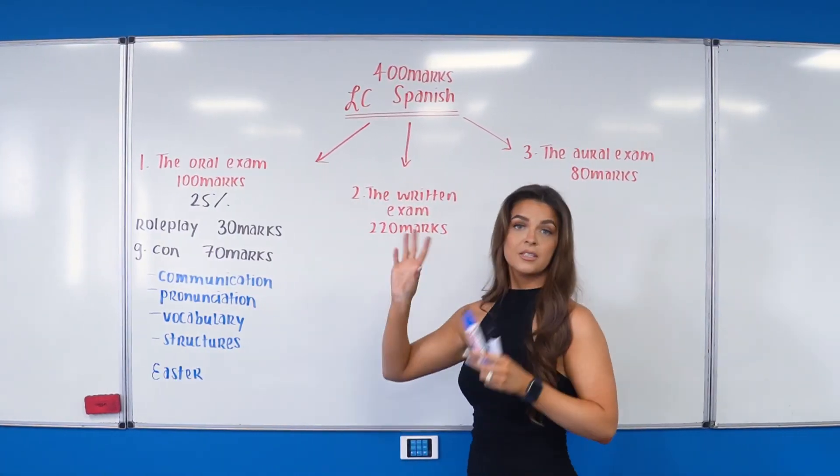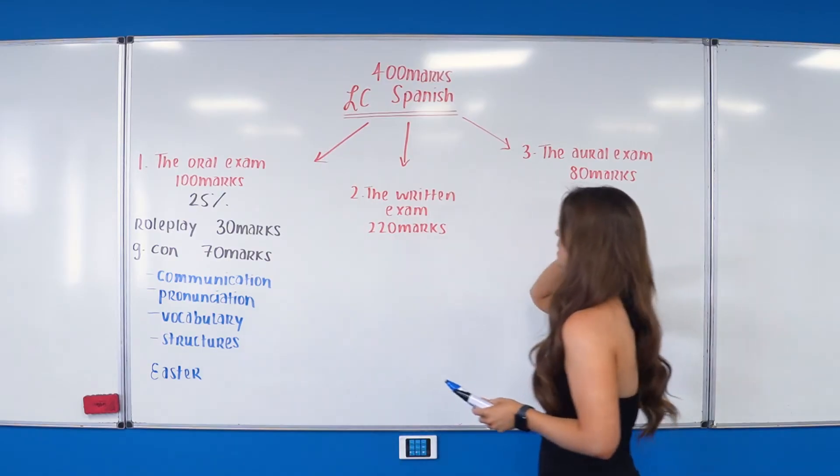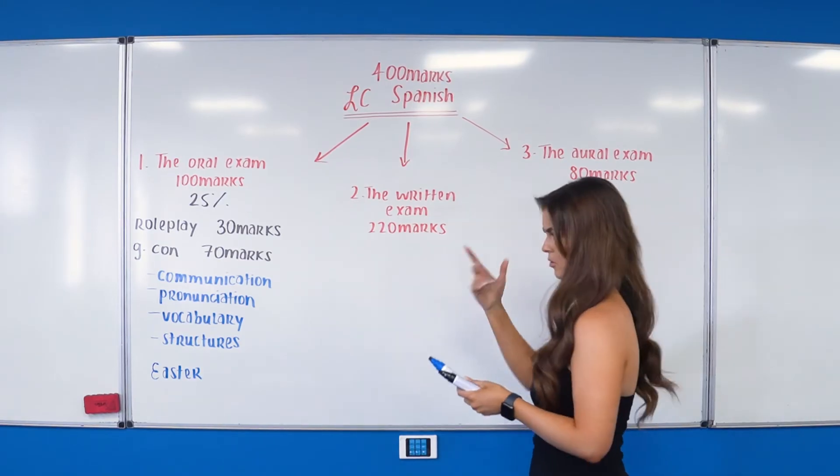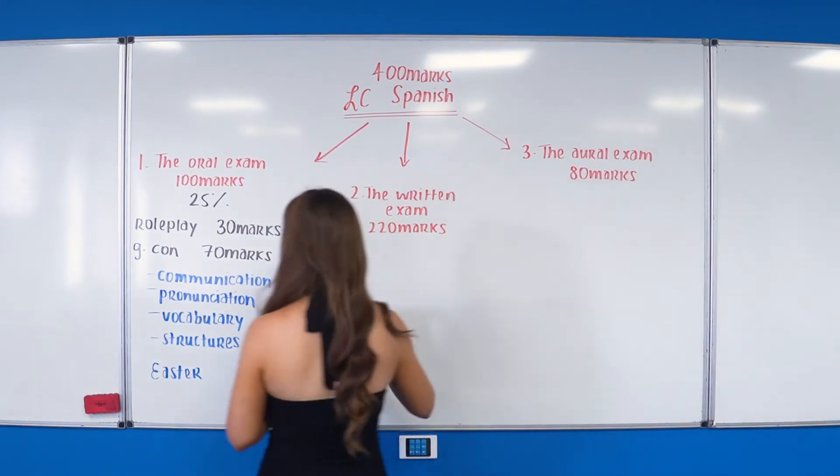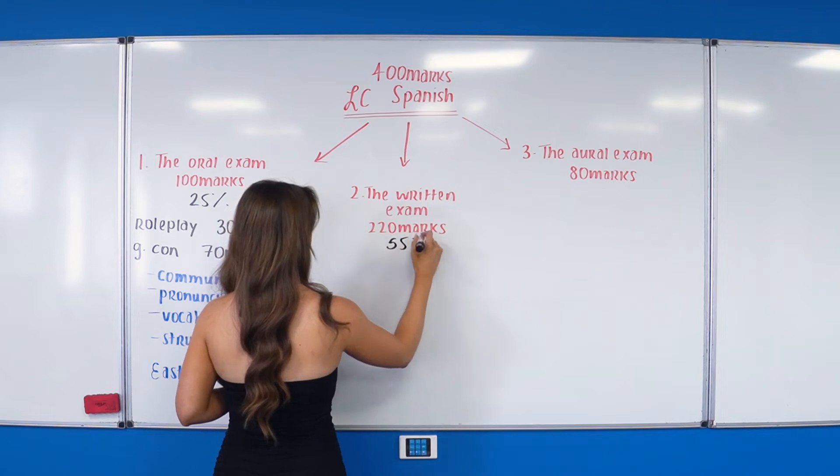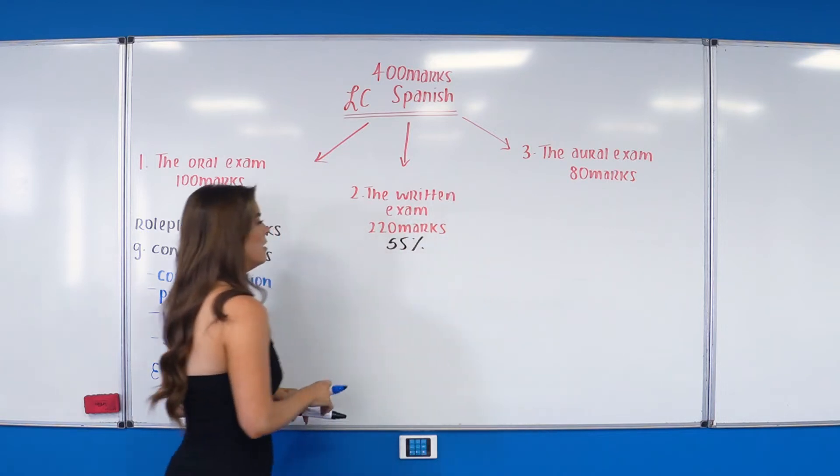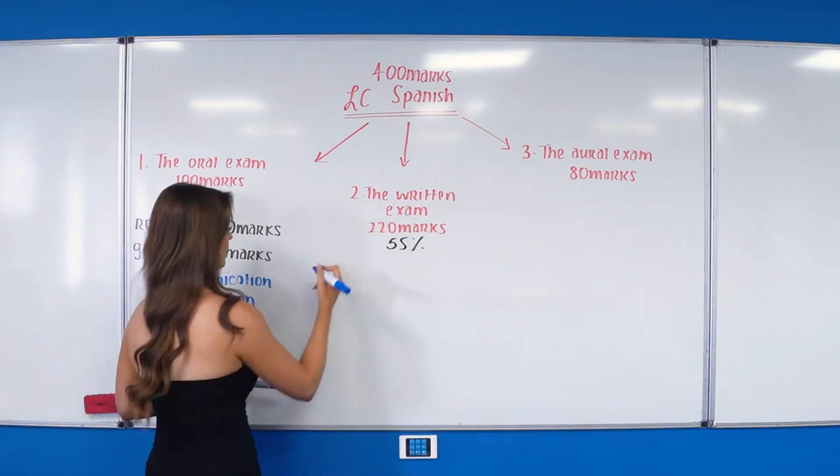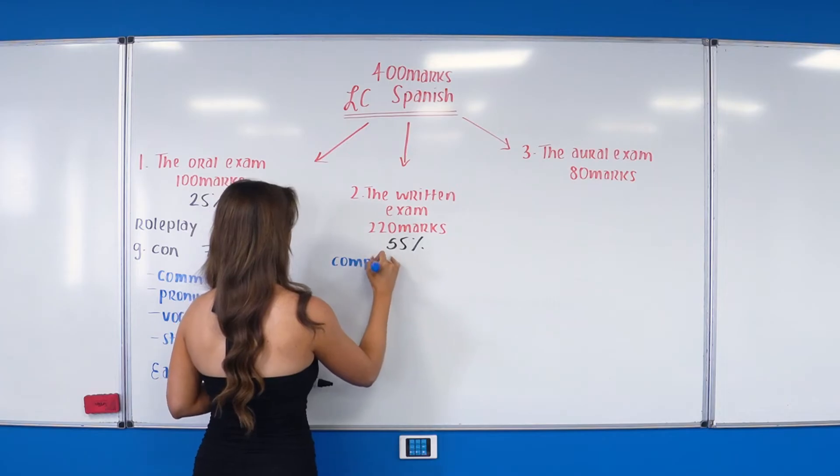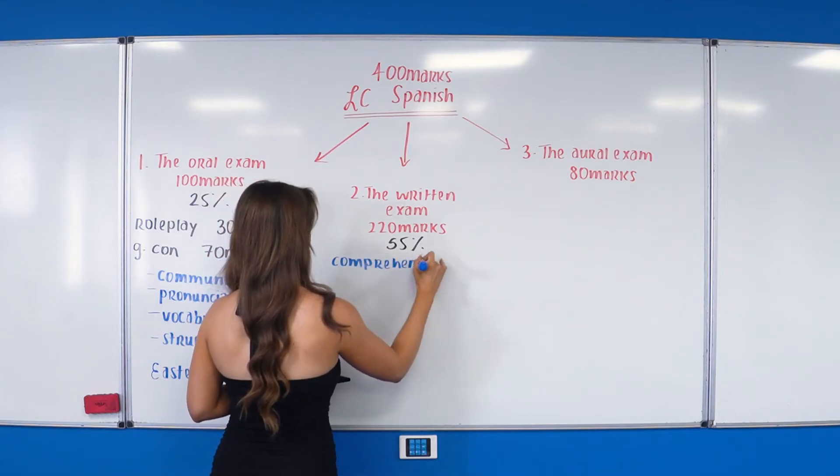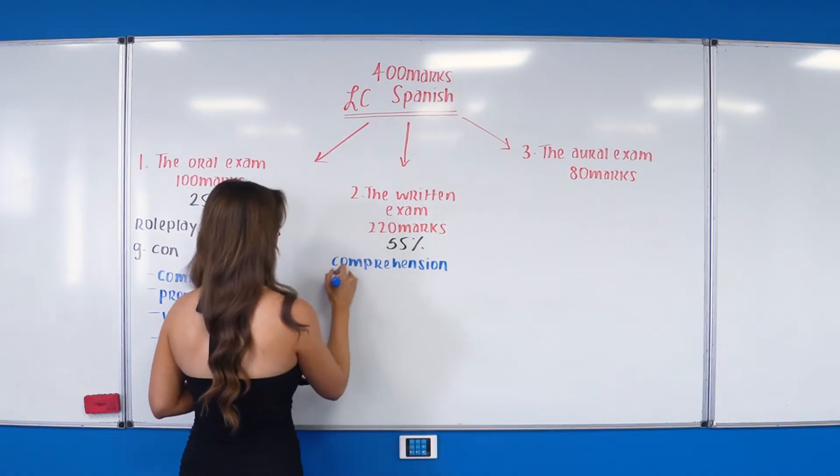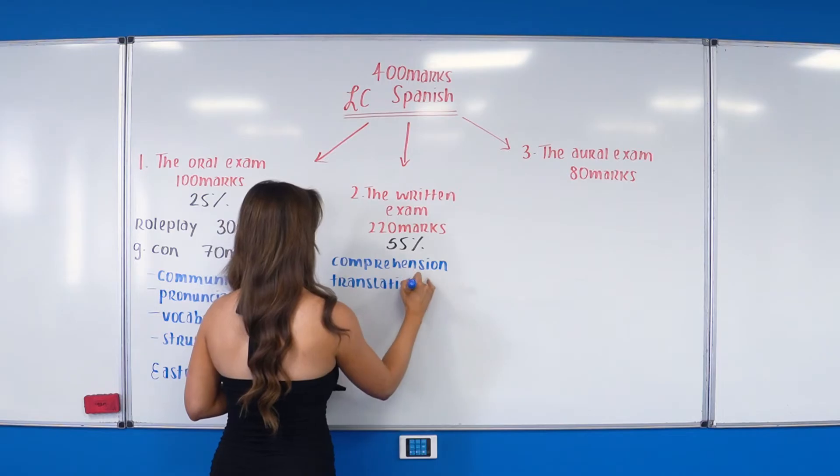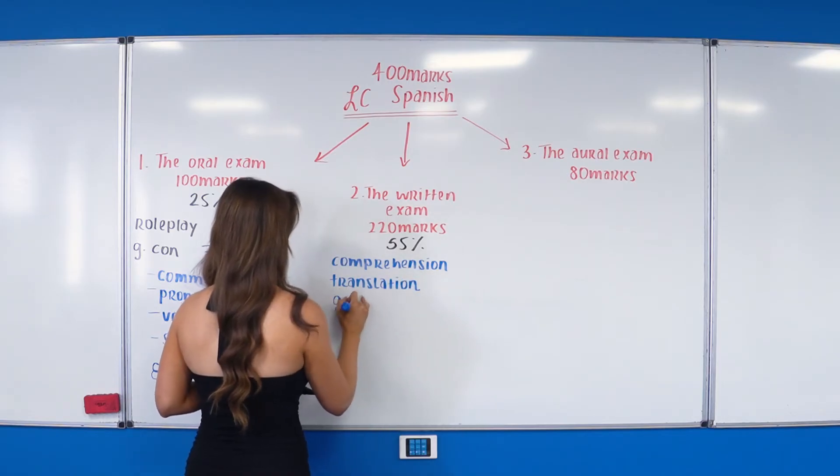Next thing then is our written exam. Our written exam is going to make up the bulk of our marks—it's 220 marks, which is going to equate to 55%. Within our written exam we have a lot of different skills being tested: our comprehension skills, translation skills, grammar skills, and written production.